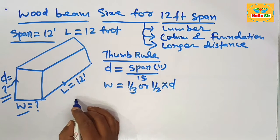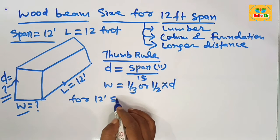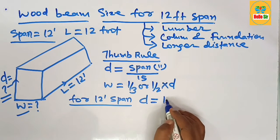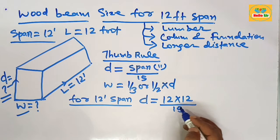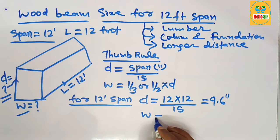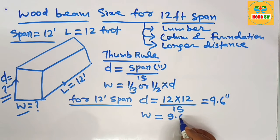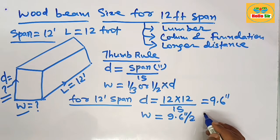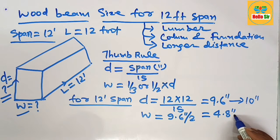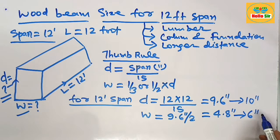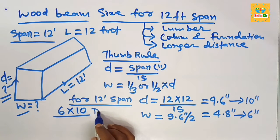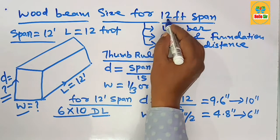Now we find the wood beam size for a 12-foot span. The depth section of the beam equals 12 multiplied by 12, divided by 15, which comes to about 9.6 inches. The width section of the beam is the depth divided by 2, which comes to about 4.8 inches. Converting, the depth becomes 10 inches and the width becomes 6 inches — meaning you need a 6 by 10 dimensional lumber to span 12 feet.